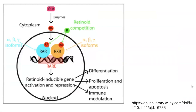To reiterate the pathway: the retinoid compound is moved into the nucleus via cytosolic retinoic acid binding protein. In the nucleus it binds to the retinoid receptor — in this example, a heterodimer between RAR and RXR. When this heterodimer is bound by the retinoid compound, the complex activates the retinoic acid response element, or RARE, in the gene. This leads to either up-regulation or down-regulation of certain genes, producing the biological effects of retinoic acid: differentiation, proliferation, apoptosis, and immune modulation.